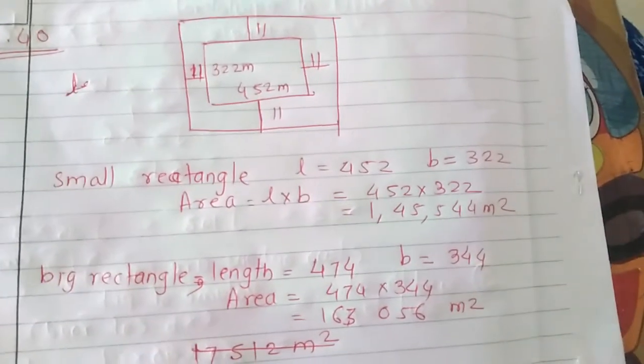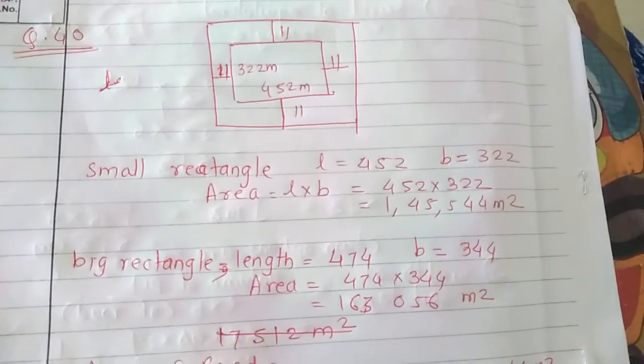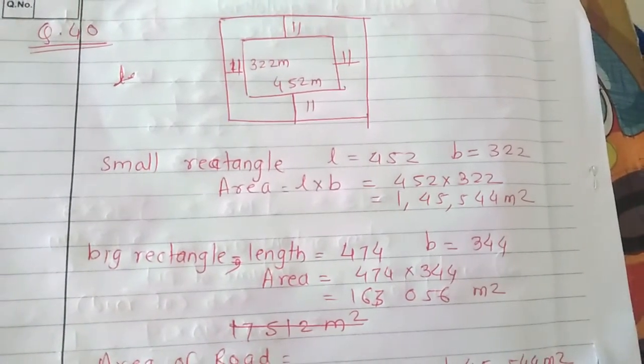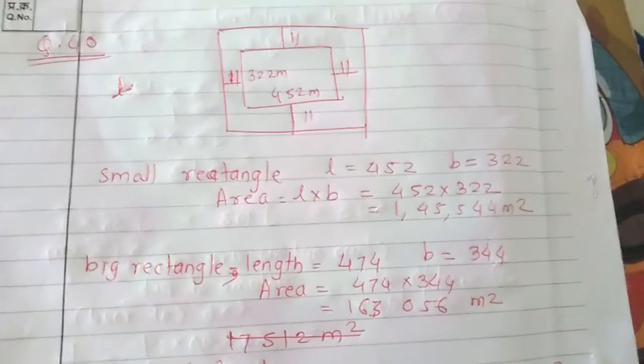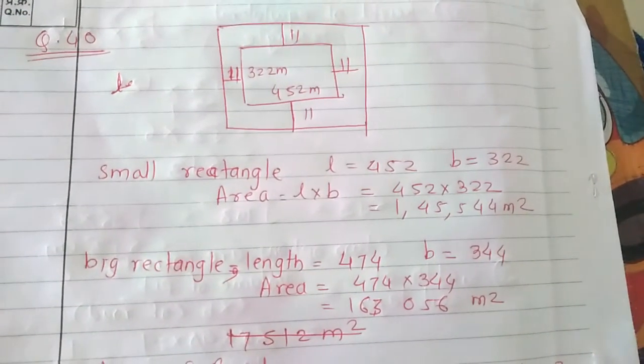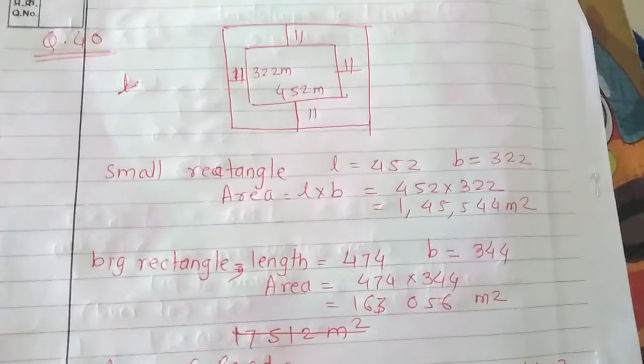So area is 145,544 meter square. If we calculate the length and breadth of the big rectangle, the length is 474 meters and breadth is 344 meters. So area is 163,056 meter square.